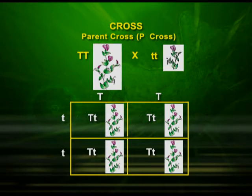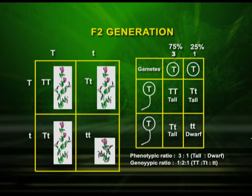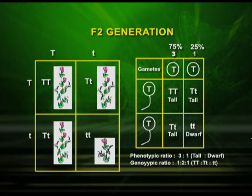In the F2 generation, he obtained tall and dwarf plants in the ratio 3:1. For the tall plants, there are two genotypes: TT (homozygous) and Tt (heterozygous). The short plant genotype is tt. The ratio obtained after F2 generation by self-pollination is 3 tall to 1 short, which is called the monohybrid ratio. A monohybrid cross is a cross between two plants differing in one character — here, stem height (tall and short).